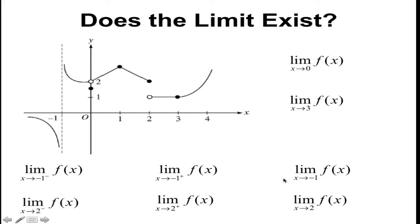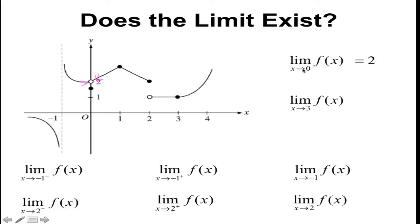Now let's try an example. I'll do one with you, then you'll complete the rest on your own and we'll check them in class the next day. I want to find the limit as x approaches zero of f of x. I go to x equals zero on the graph, come from the left and from the right, and as I get closer and closer, the y value I'm getting closer to is 2. It does not matter that the actual y value is not 2 — it's what the function is getting really close to. So this limit is 2.